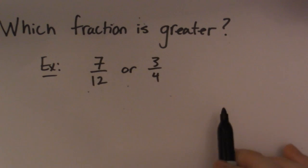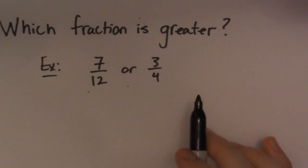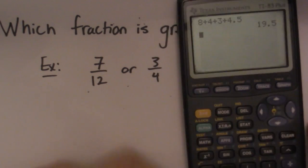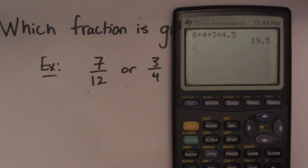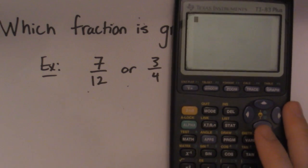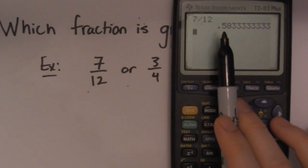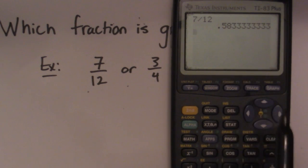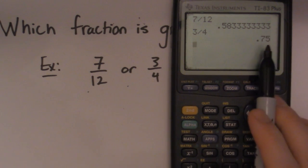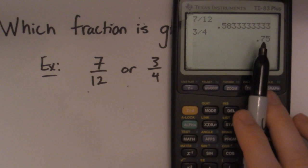So a couple different ways we can do this. If you're on a test and your teacher gives you a calculator, then that's what I'm using first. So I would simply go 7 divided by 12 and you get a decimal 0.583 repeating and then 3 over 4, 0.75. So obviously 3 over 4 is the bigger fraction because of the decimal.